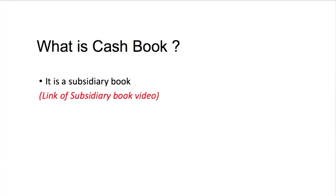So first of all, what is cashbook? Cashbook is a subsidiary book. You all know about other subsidiary books like purchase book and sales book. In purchase book we record credit purchase transactions. In sales book we record credit sales transactions. So cashbook is one of the subsidiary books.